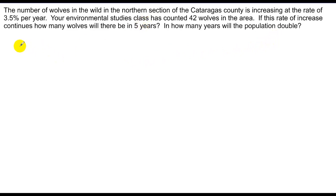So what we know in the first place, we have y equals c times 1 plus or minus r to the t. So our model is going to be y equals our initial number of wolves is 42. We're increasing by 3.5% a year, so that's plus .035 to the t.